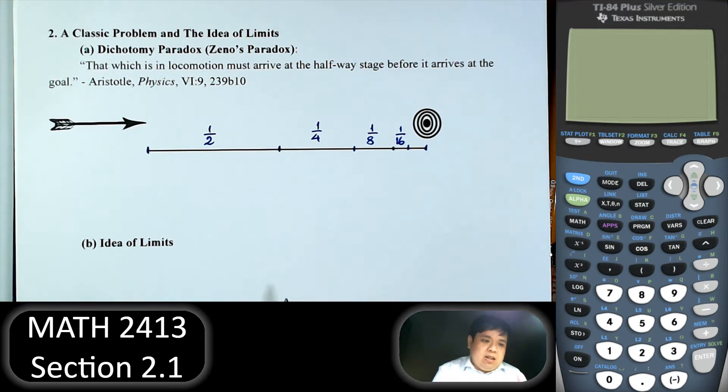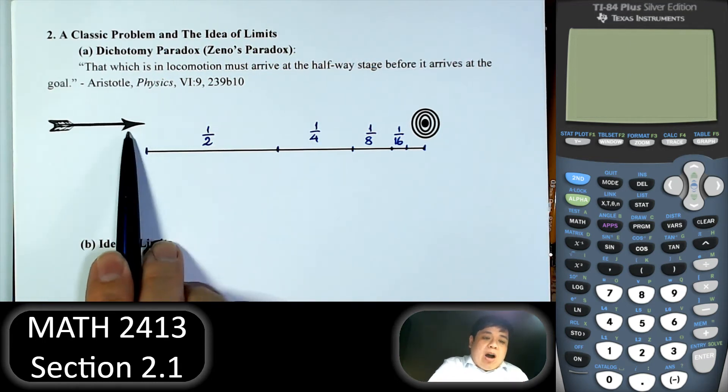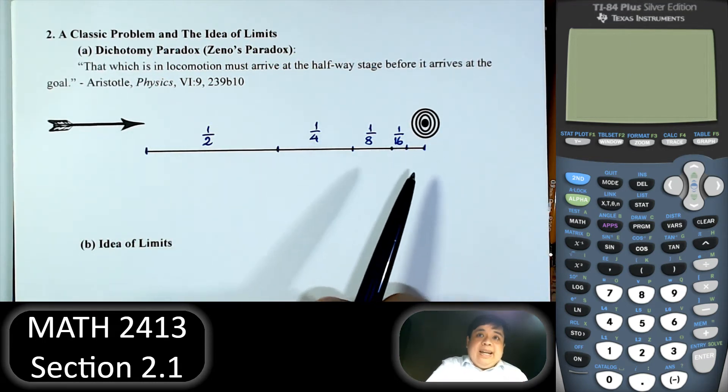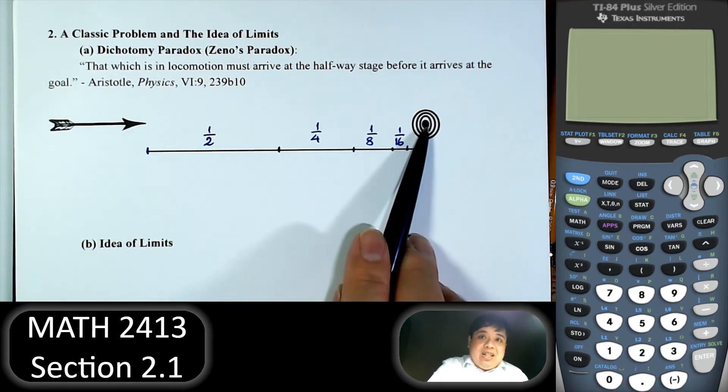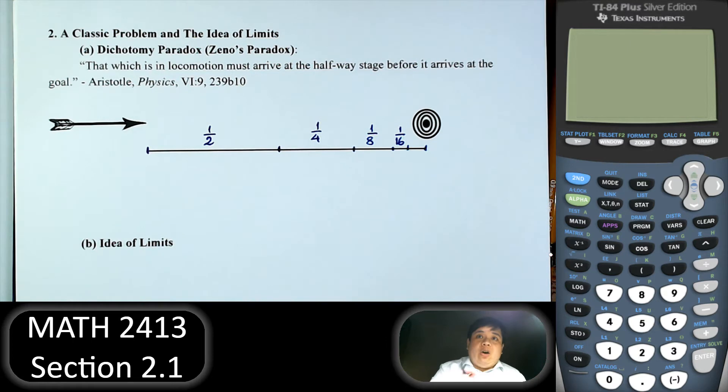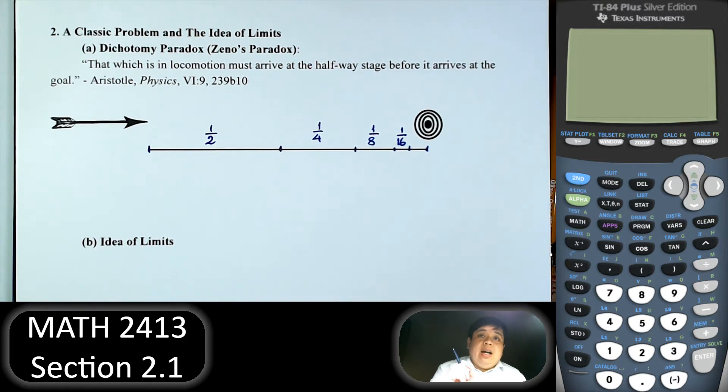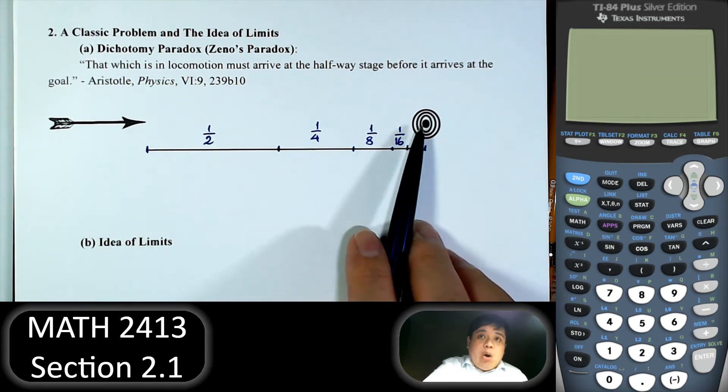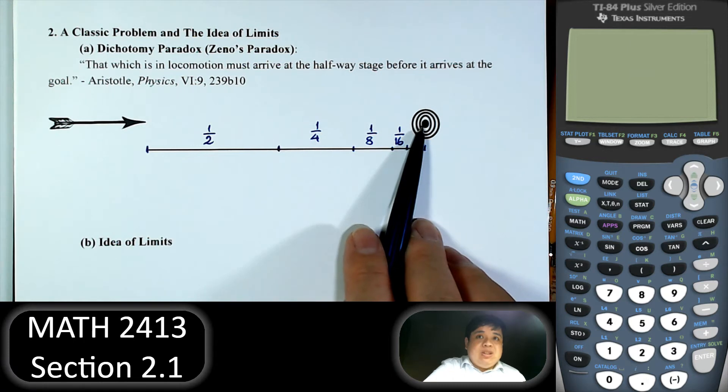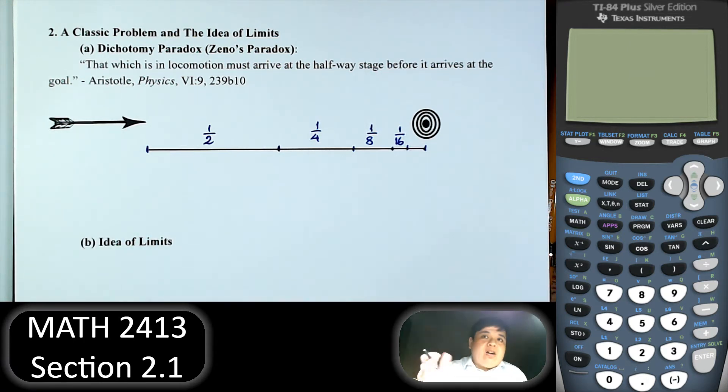So the idea of limit is this. If we have an object approaching the other, it doesn't matter whether the object actually hit the target or not. It is irrelevant in this case. Once again, whether the arrow hit the target or not, it is irrelevant. The idea of limit is if we can say the arrow can get as close as we want to the target, then we say the limit is the target. Whether it hit or not is not important. I will write it out.